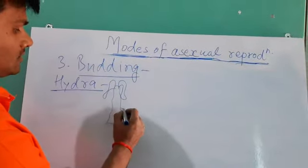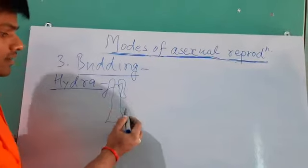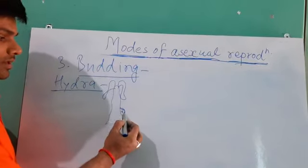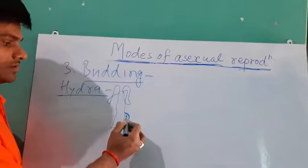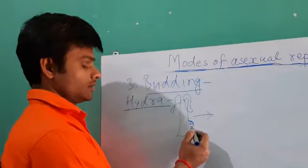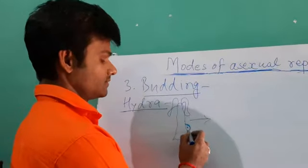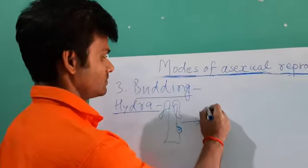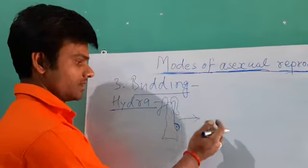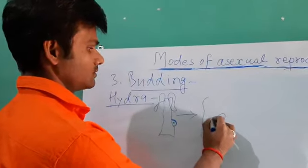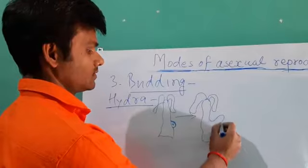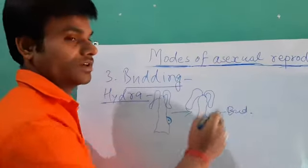This is a small portion. This is an outgrowth which appeared on the outside of the parent. Now, this outgrowth grows in size. And a bud is formed.